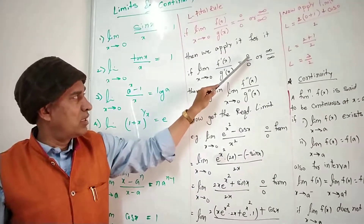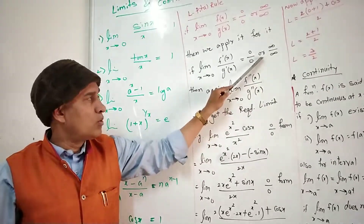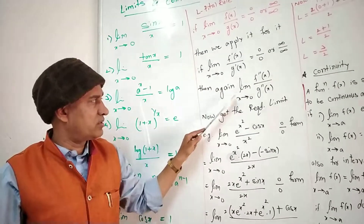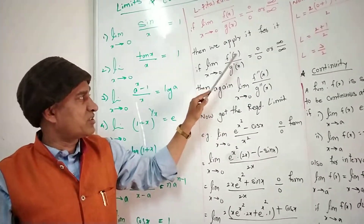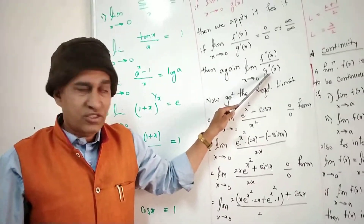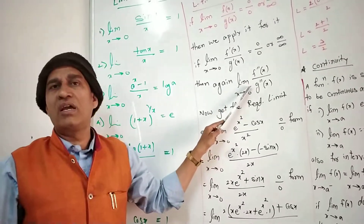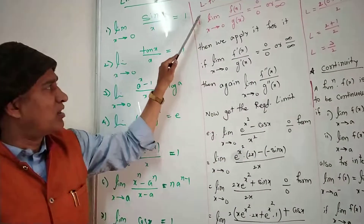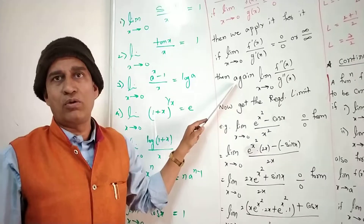If after applying the limit we get the answer in the form 0/0 or infinity/infinity, then we differentiate the numerator and denominator separately with respect to x. We then get lim f'(x) / g'(x), apply the limit again, and get the final answer. This is a very important part for solving questions of limits and continuity — that is L'Hôpital's Rule.